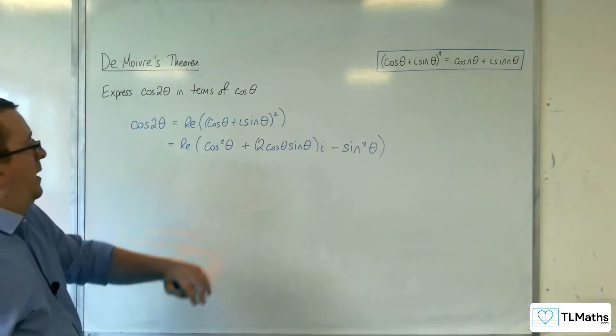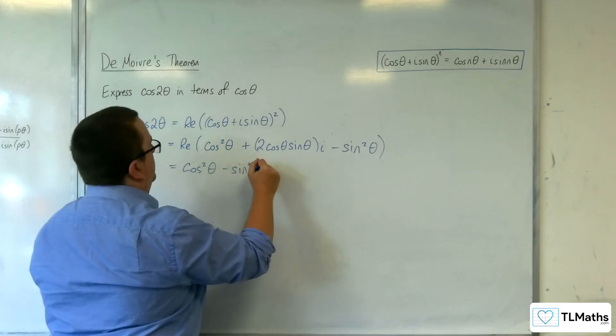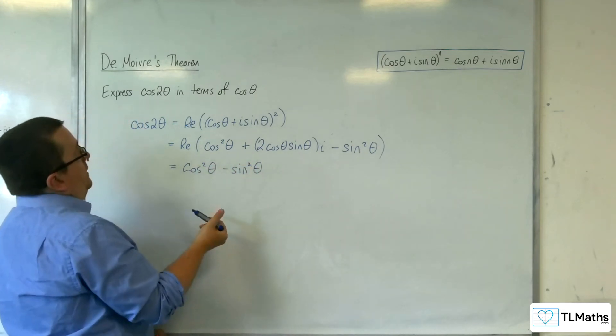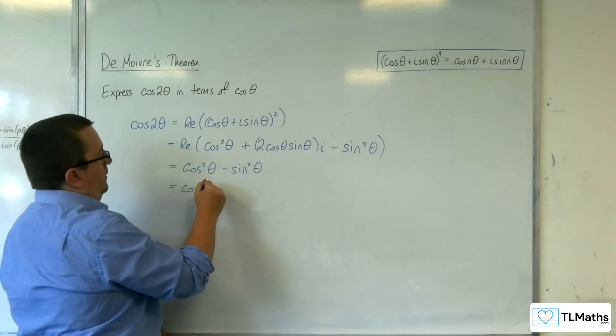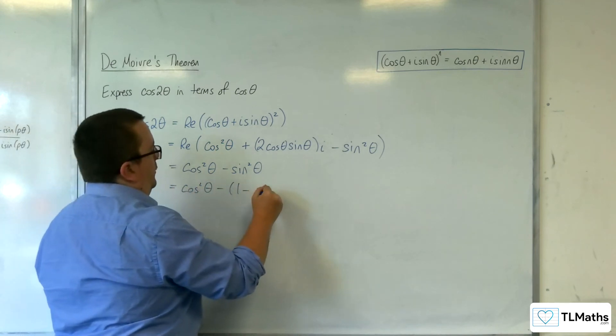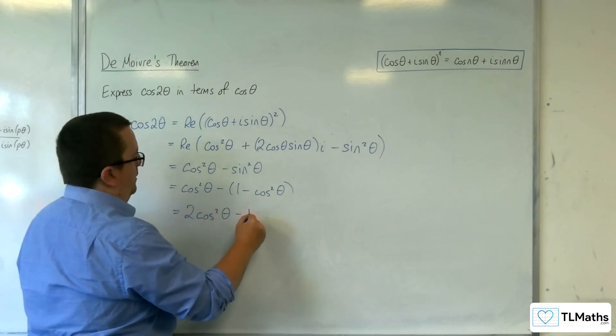So the real part of that is cosine squared theta minus sine squared theta. And if I just want in terms of cosine, then I just replace the sine squared with 1 minus cosine squared. And I'm left with 2 cosine squared theta minus 1.